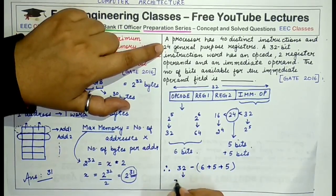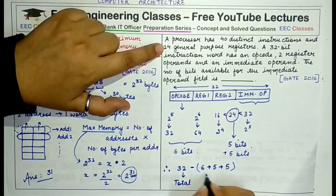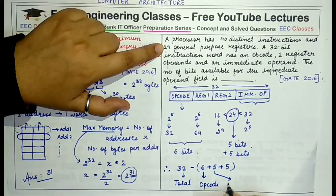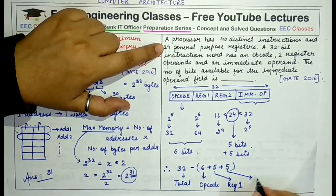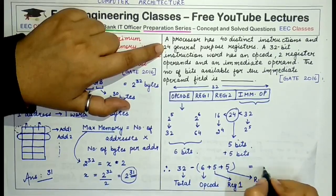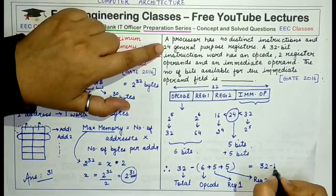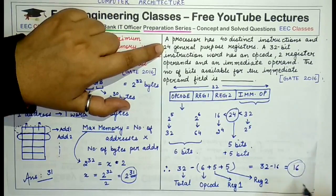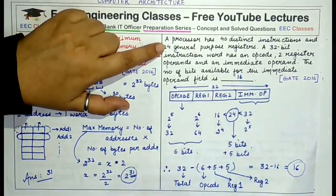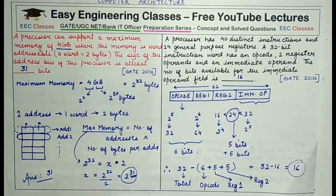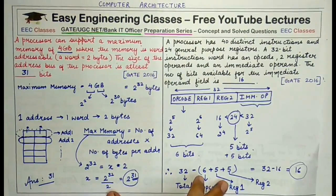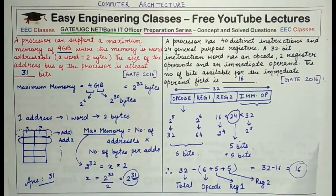The number of bits for the immediate operand field equals 32 minus (6 plus 5 plus 5). The 6 bits represent the opcode field, the first 5 bits represent the first register operand, and the next 5 represent the second register operand. This gives 32 minus 16, which equals 16. So the answer is 16 bits for the immediate operand field.